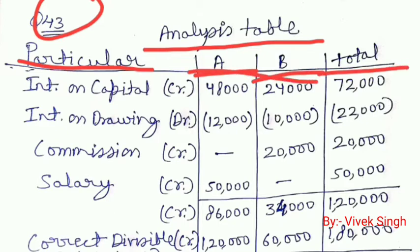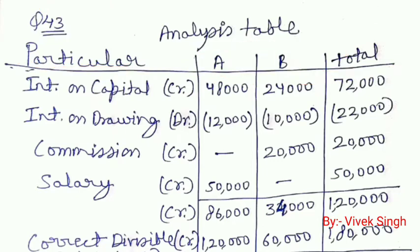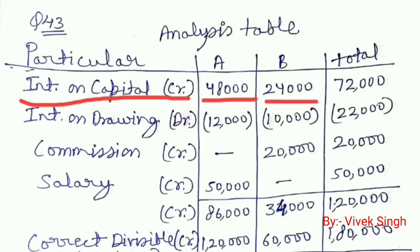A and B are the partners, and the total column relates to the firm — showing firm expenses or firm income. The first omission is interest on capital, which will be shown as a credit balance. Interest on capital is always shown on the credit side of the partners' capital account because we are giving it to the partner.